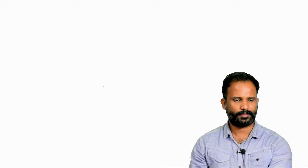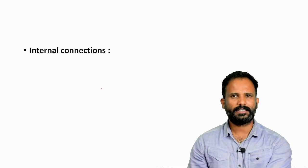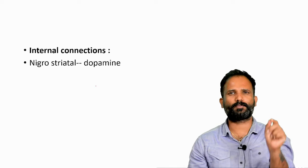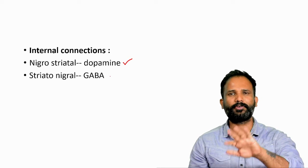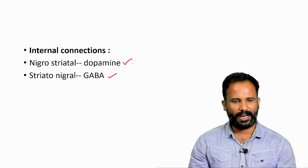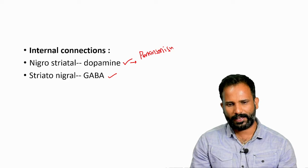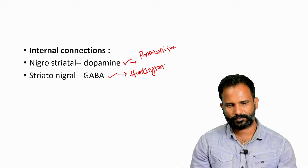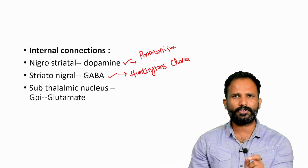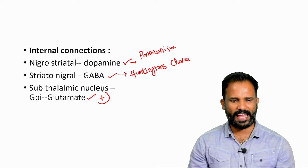The internal connections include the nigrostriatal pathway — substantia nigra to corpus striatum — where the main neurotransmitter is dopamine, which is inhibitory. The reverse striatonigral pathway uses GABA. Disease of the nigrostriatal pathway causes Parkinsonism, and disease of the striatonigral pathway causes Huntington's chorea. There is also a connection from the subthalamic nucleus to globus pallidus interna using glutamate, which is excitatory.